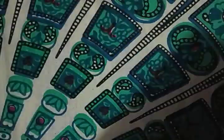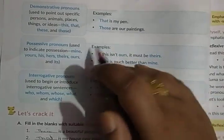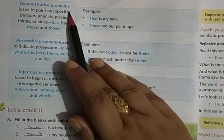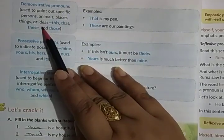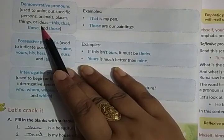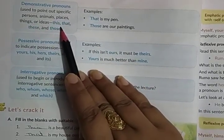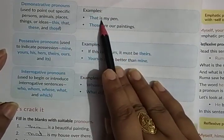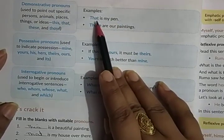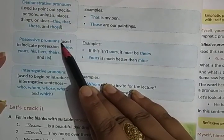So we have covered: pronoun is a word used instead of a noun, and the first type is personal pronoun. After personal pronouns, we have demonstrative pronouns — pronouns used to point out specific persons, animals, places, things, or ideas. Examples are: this, that, these, and those. For instance: 'That is my pen' and 'Those are our paintings.'